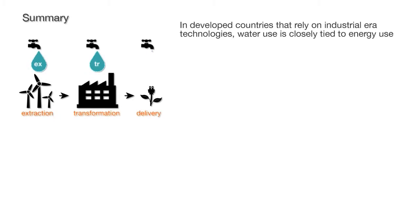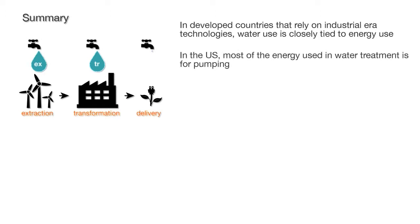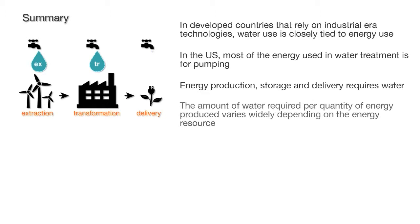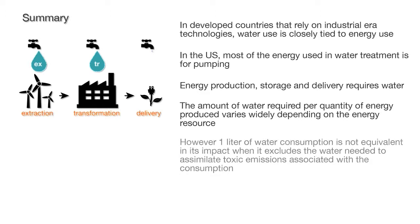In developed countries that rely on industrial-era technologies, water use is closely tied to energy use. In the United States, most of the energy used in water treatment is for pumping. Energy production, storage, and delivery requires water. The amount of water required per quantity of energy produced varies widely depending on the energy resource. However, one liter of water consumption is not equivalent in its impact when it excludes the water needed to assimilate toxic emissions associated with the consumption. Therefore, it's critical to use reflective judgment when examining and comparing data.